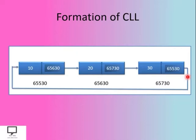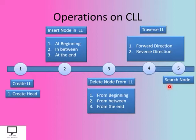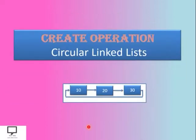The operations that can be performed on a circular linked list are: create a linked list, insert a node, delete a node, traverse a linked list, and search a node. These are the same operations as SLL and DLL, with the only difference being that we must maintain the rules of the circular linked list — there will be no null, and the last node will always hold the address of the first node to form a circle.